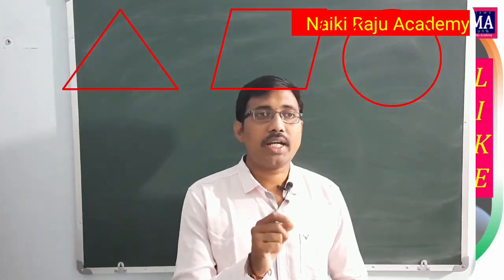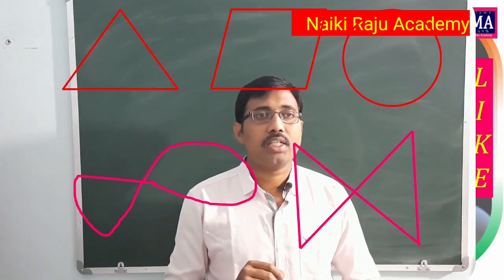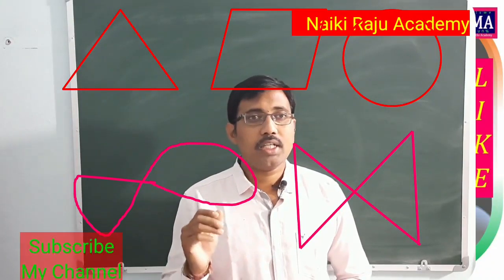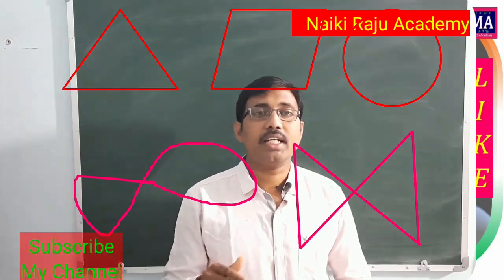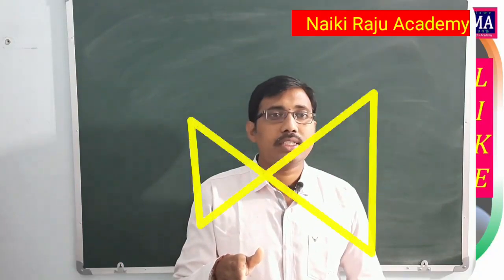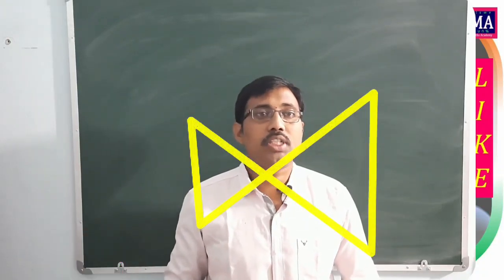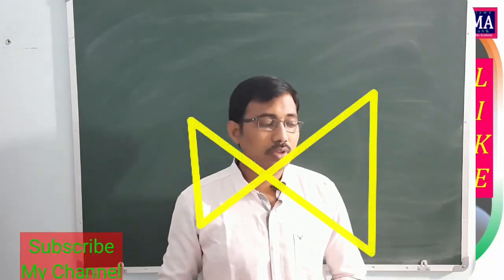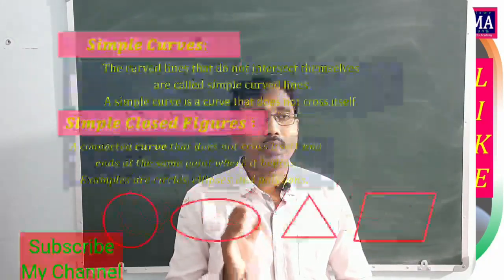Observe the screen: triangle, quadrilateral, circle. Now observe another three figures. What is the difference between these two sets of figures? In the first set, the curves do not intersect. In the second set, the curves intersect each other — for example, in a quadrilateral where two sides cross. These are called non-simple curves or non-simple closed figures.